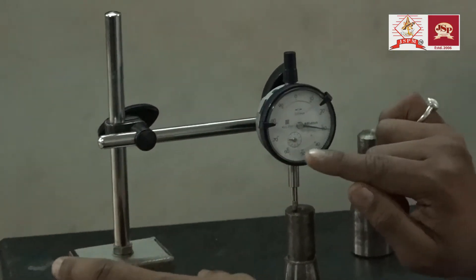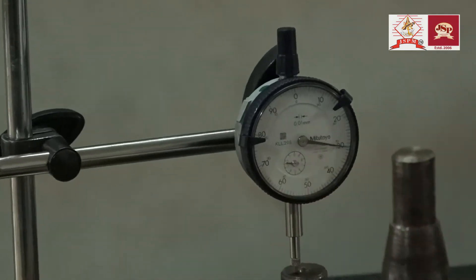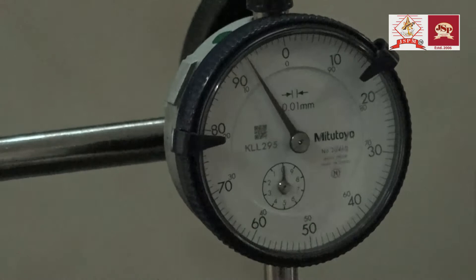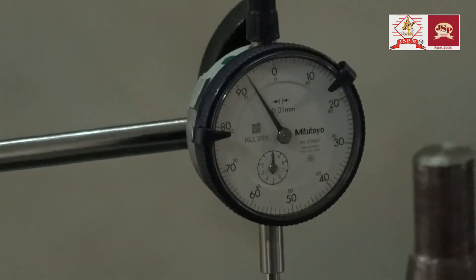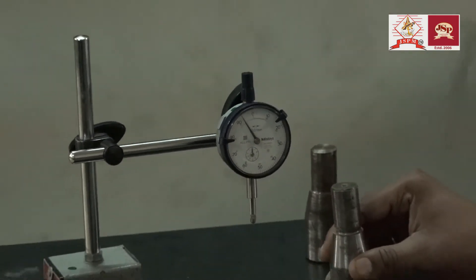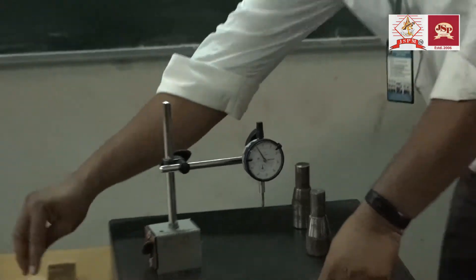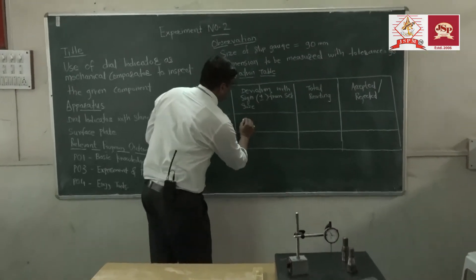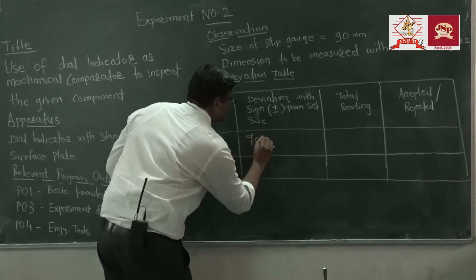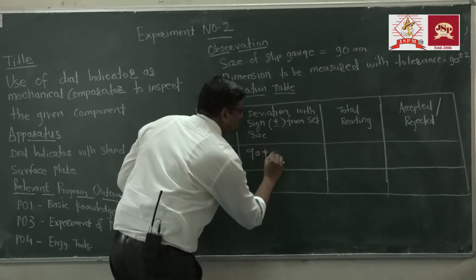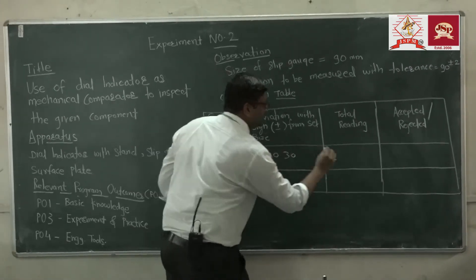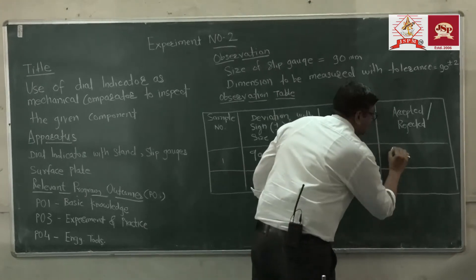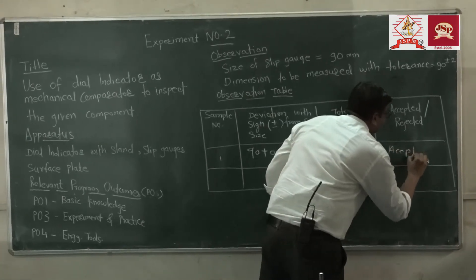The reading is 90.30. This job is 90.30 mm, which means this job is accepted. In the observation table, sample number 1: deviation is +0.30, total reading is 90.30, and the job is accepted.